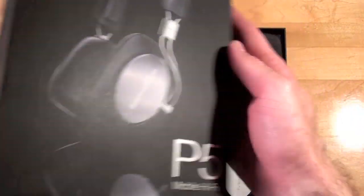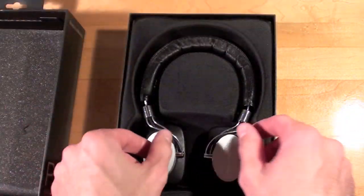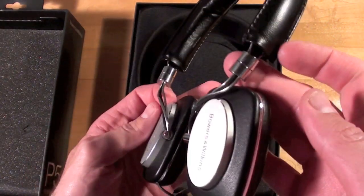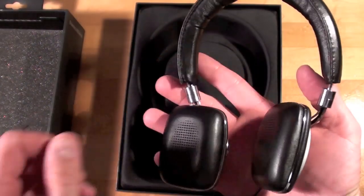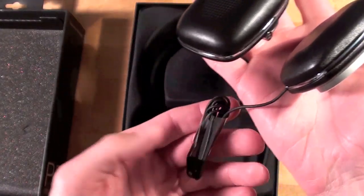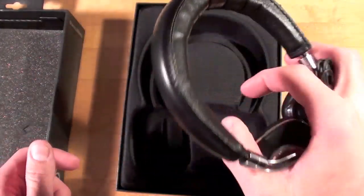Now when we open the packaging, we are greeted with the headphones sitting in the cloth-lined cradle, and you can see they are folded flat, which is how you will transport them. And of course we have the wire already connected and bundled together.